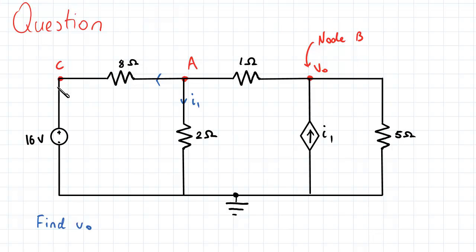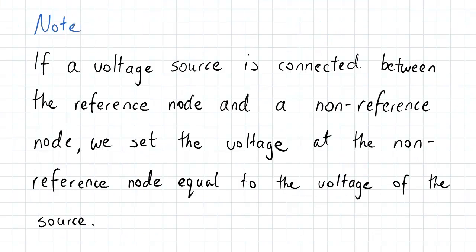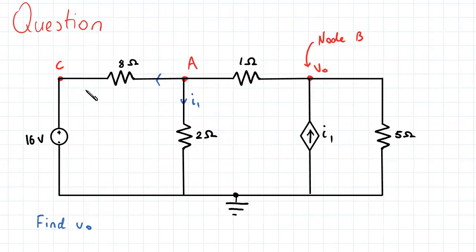So to find VC, we can do the analysis for VC, or we can take a shortcut, namely that we know that if a voltage source is connected between the reference node and a non-reference node, then the voltage at the non-reference node is equal to the voltage of the source. So basically, since node C is connected to the reference node via a voltage source, that means...